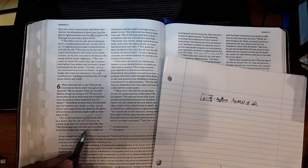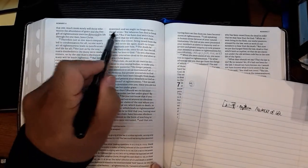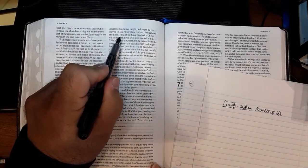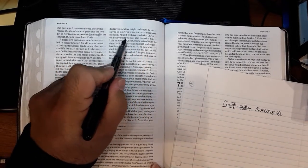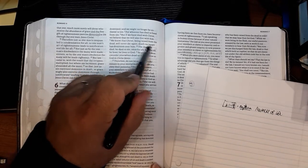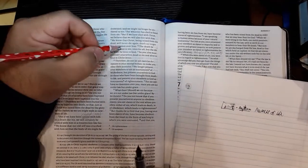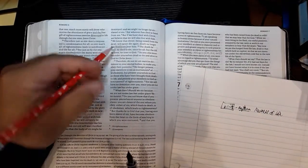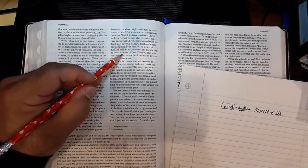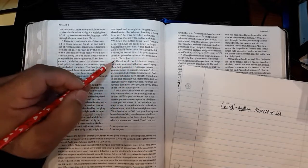We know that our old self was crucified with him, so that the body of sin might be destroyed, and we might no longer be enslaved to sin. For whoever has died is freed from sin. But if we have died with Christ, we believe that we will also live with him. We know that Christ being raised from the dead will never die again. Death no longer has dominion, there's that word again, over him. The death he died, he died to sin once for all, but the life he lives, he lives to God. So you also must consider yourselves dead to sin and alive in Christ.